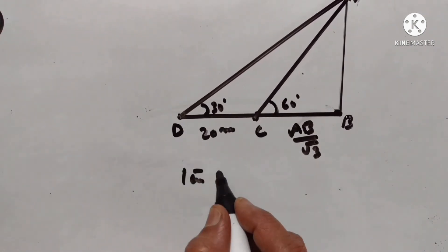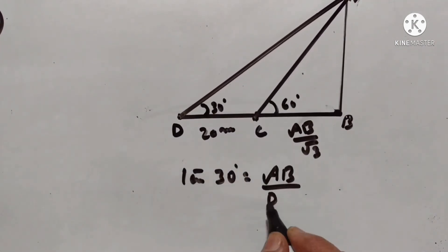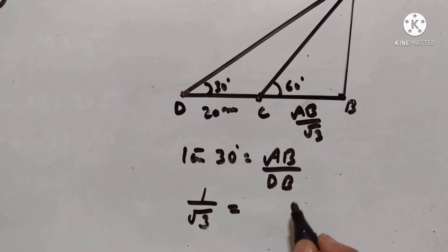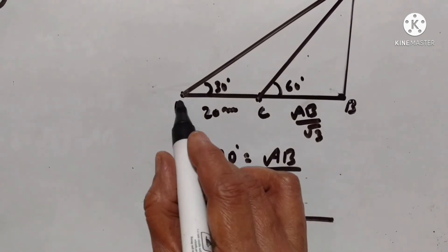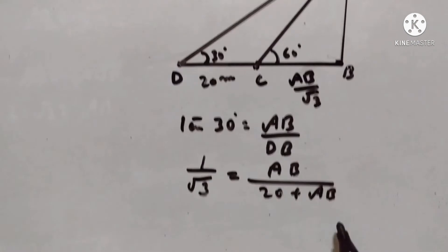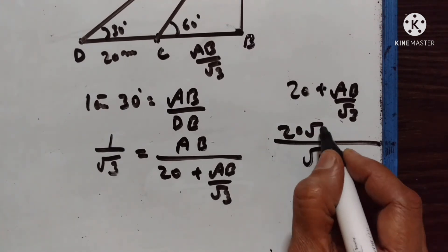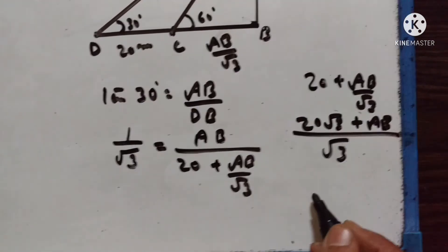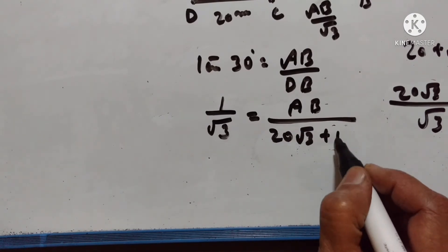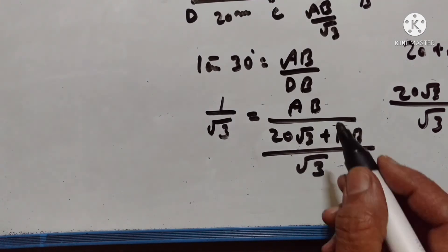Tan 30 is equal to AB upon DB. Tan 30 is equal to 1 upon square root of 3, which equals AB upon DB. DB is equal to 20 plus AB upon square root of 3. Square root of 3 is the LCM, giving 20 square root of 3 plus AB upon square root of 3.